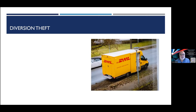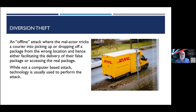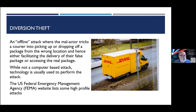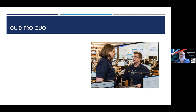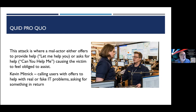Diversion theft is where the malactor tricks a courier into picking up or dropping off a package at the wrong location, either delivering a false package or intercepting the real one. While not purely computer-based, it does use technology. The US Federal Emergency Management Agency website lists some really high-profile attacks using diversion theft. Quid pro quo is where the malactor either offers to help you or asks you to help them, causing you to feel obliged to assist.